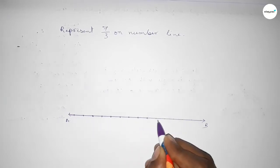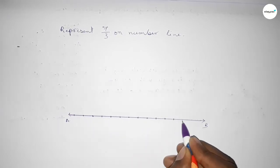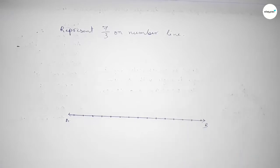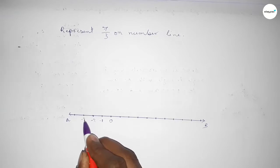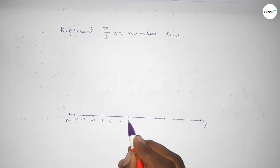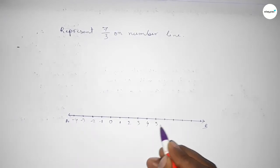First we have to draw here the number line, then we have to represent the number. So taking here starting number zero, this side minus one, minus two, minus three, minus four, and this side one, two, three, four, five, six, seven, eight, nine, ten.